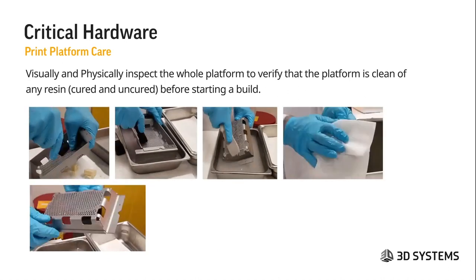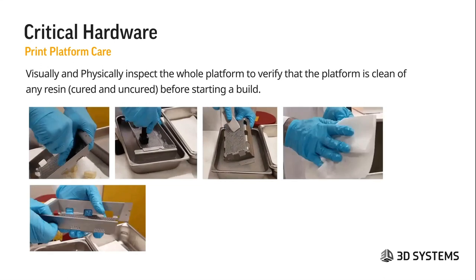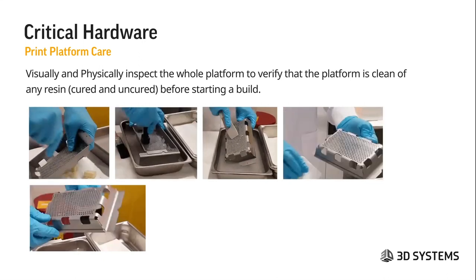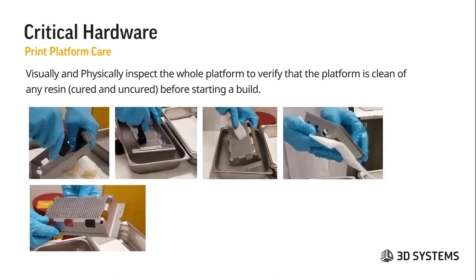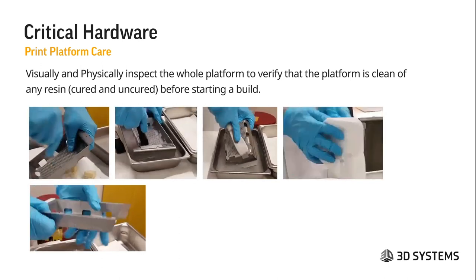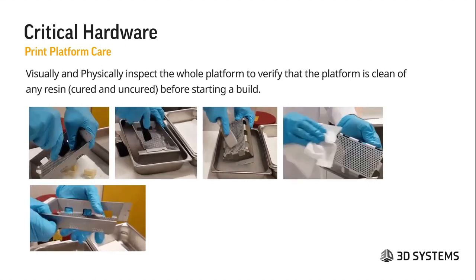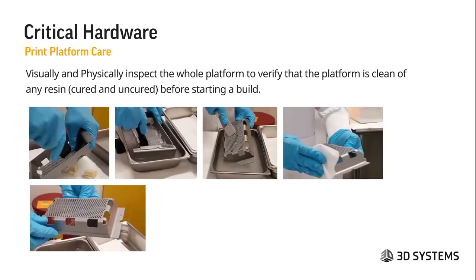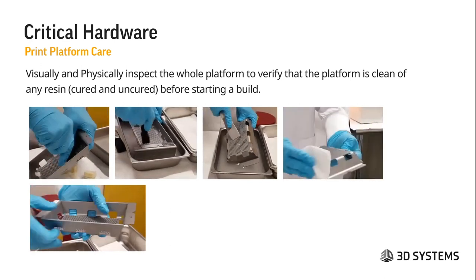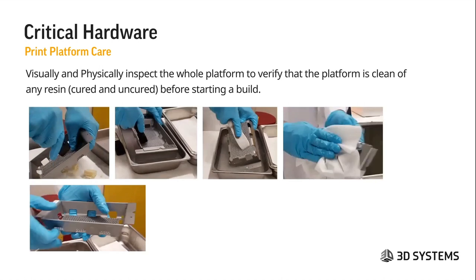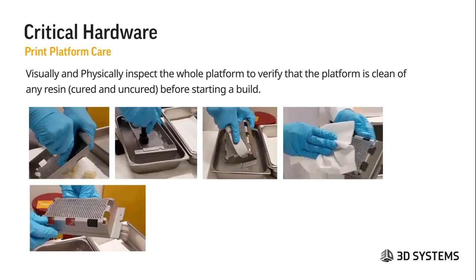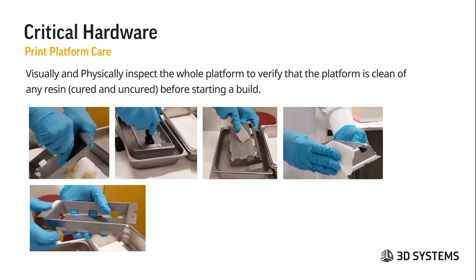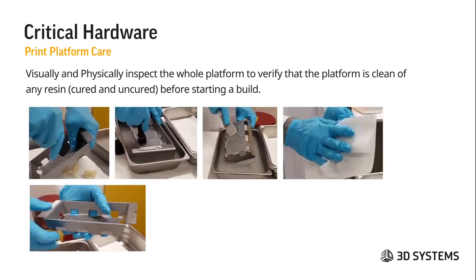Visually and physically inspect the whole platform to verify that it is clean of any resin — both cured and uncured — before starting a build. A tool is used to push parts off the platform, parts are scraped off in an IPA rinse, the platform is wiped down and inspected to ensure no debris remains on either side. This is very important for maintenance and for the life of the membrane, because debris can puncture, bend, cause print defects, or even burst the film.